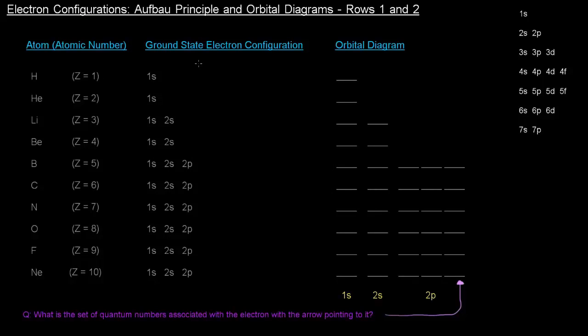Okay, so in this video we're going to figure out the electron configurations, specifically the ground state electron configurations, and the orbital diagrams for all the elements in the first two rows of the periodic table. So if you have a periodic table handy, great. If you don't, grab one and pause this video.